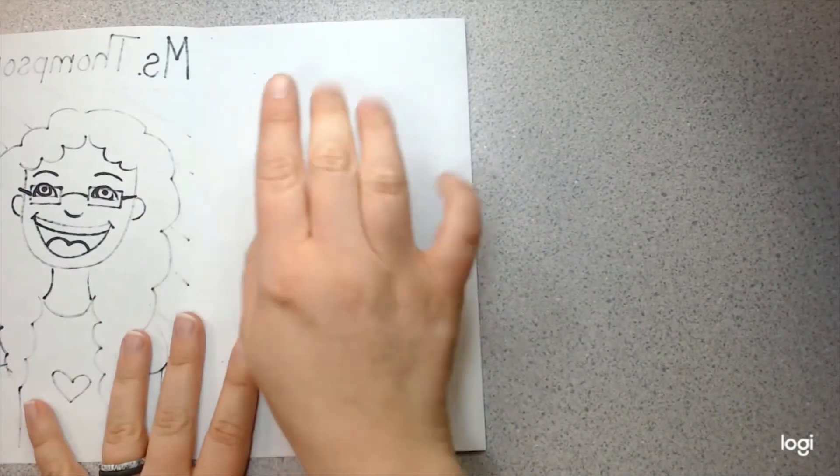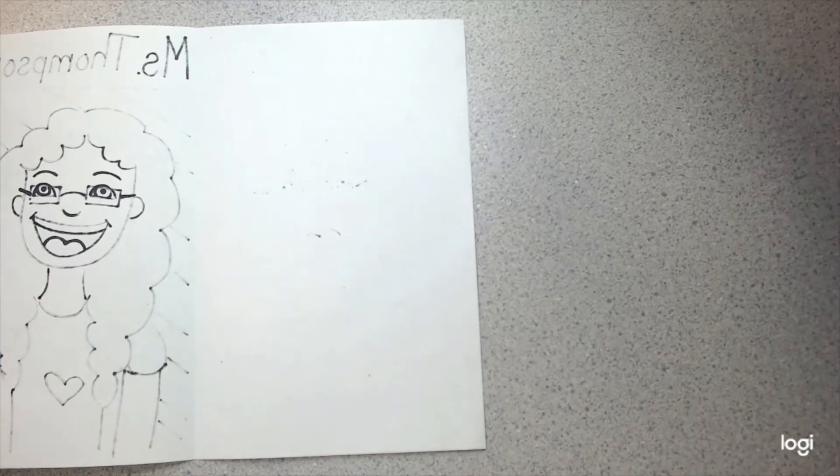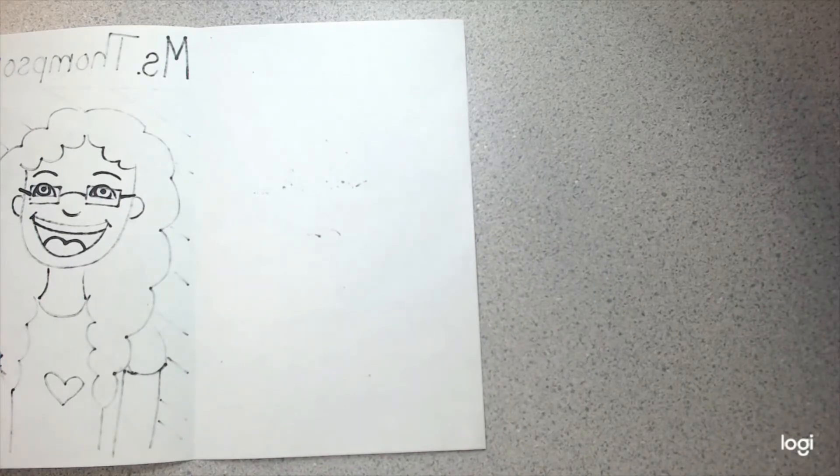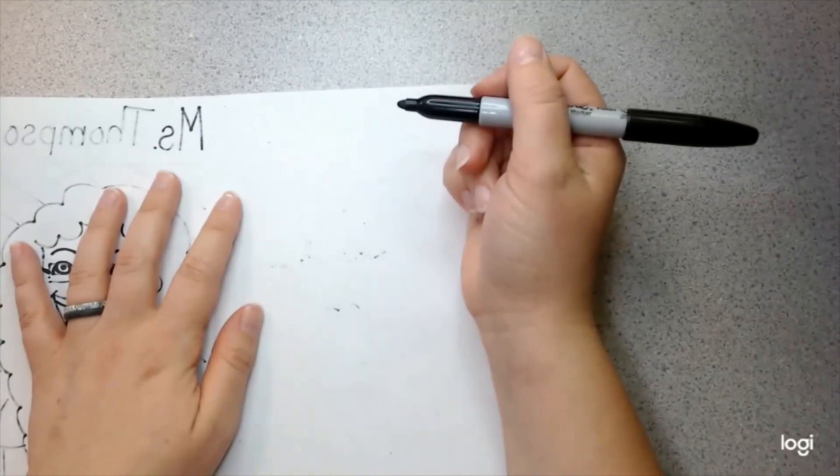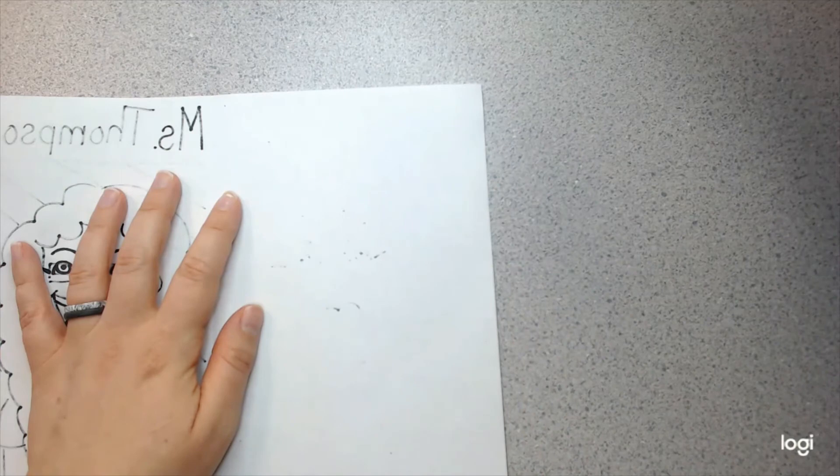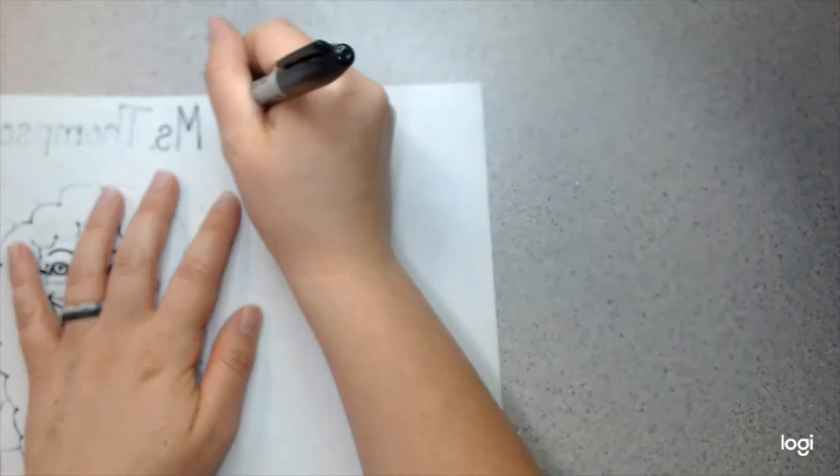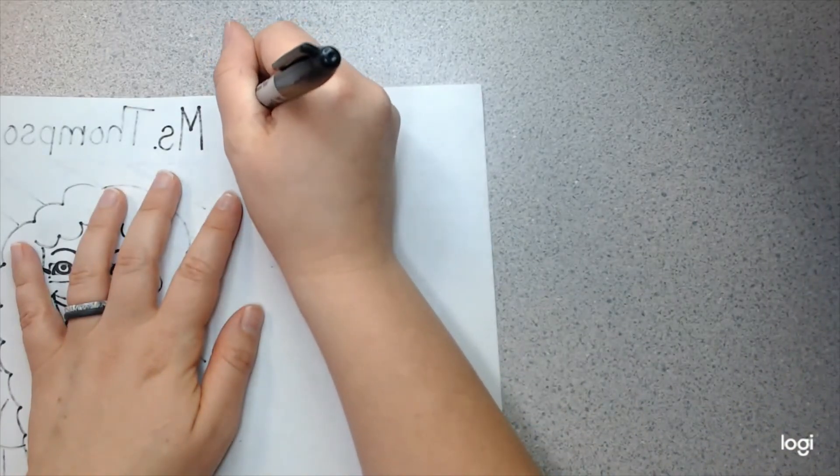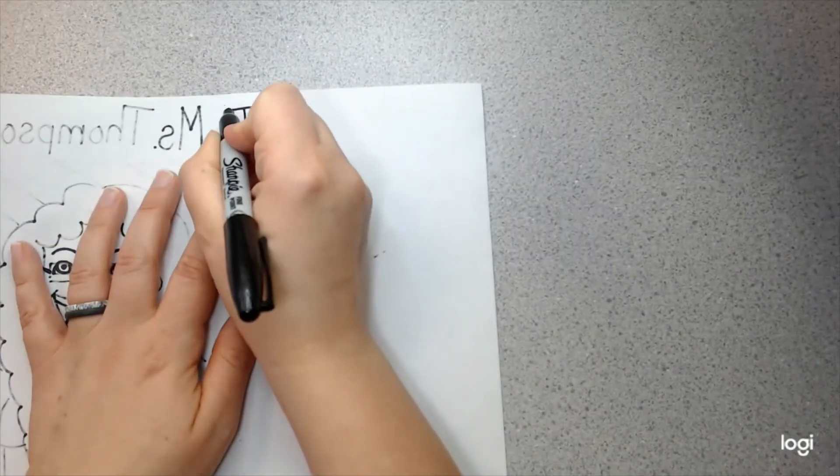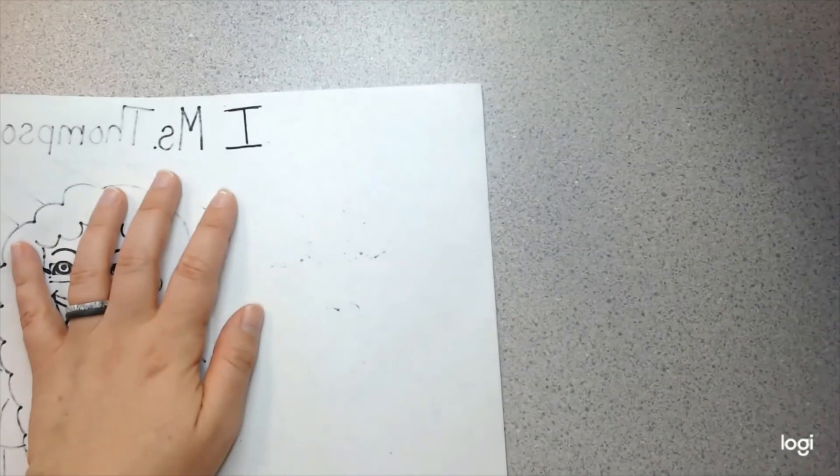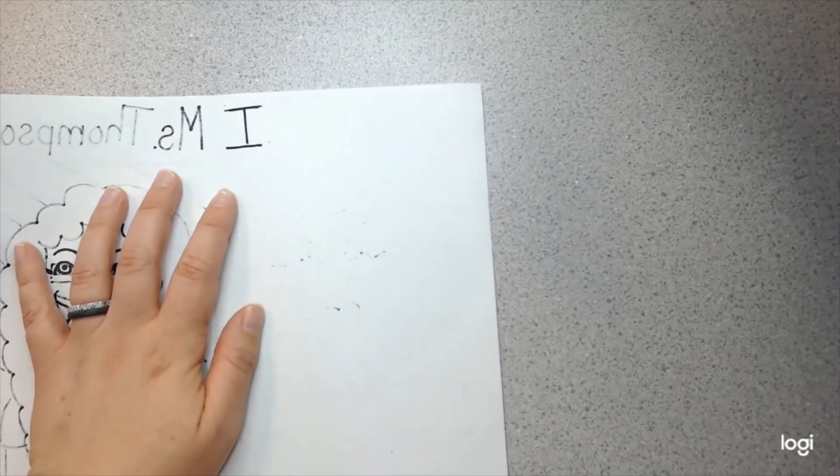I'm going to use the sentence starter, I love. And then I'm going to draw all the things that I love so that you can get to know me better. So, let's write this together. I. When we write the word I by itself, it's always a capital. I. Just like that. Okay. Now let's write the word love.